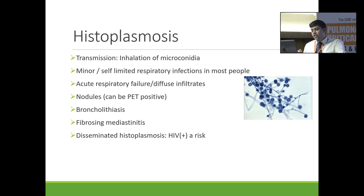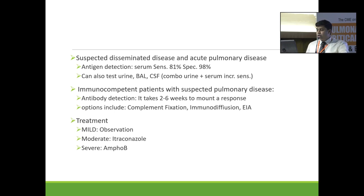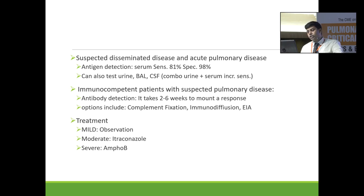Histoplasmosis occurs by inhalation of microconidia and is self-limited in most people, but where it spreads, it may manifest as ARDS. Classic presentations include nodules that can be falsely PET-positive, broncholithiasis obstructing airways, and fibrosing mediastinitis. If a radiologist reports fibrosing mediastinitis or irregular lymph nodes crossing normal margins with pleural involvement, histoplasmosis is a strong preclinical probability. For diagnosis: in acute disease, use antigen (serum sensitivity 81%, specificity 98%); in competent patients with chronic pulmonary disease, antibody is better as it comes positive after 2-6 weeks. Treatment: mild — observe; moderate — Itraconazole; severe — Amphotericin B.